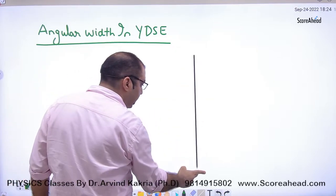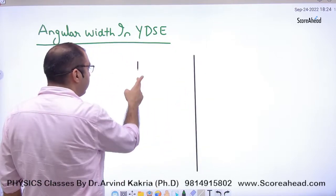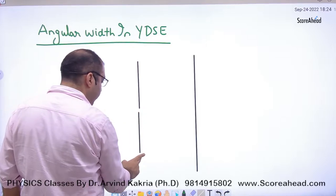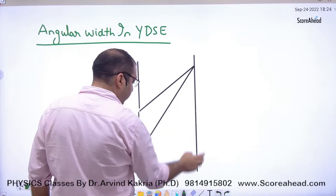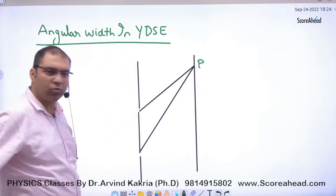Suppose you have this screen given. These two slits, the first slit and the second slit. It is given. It is P point. What is interference?